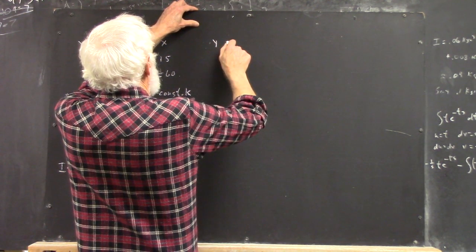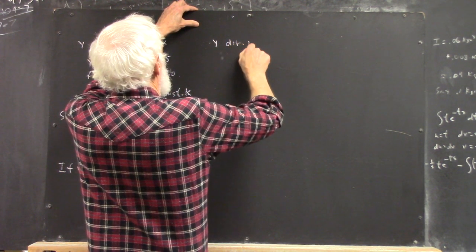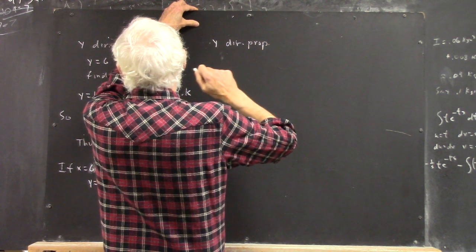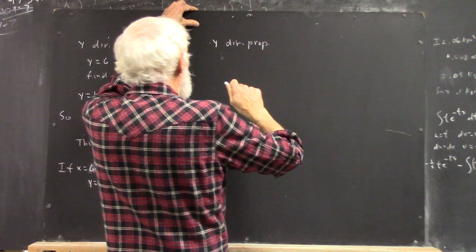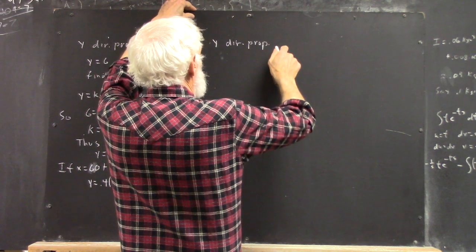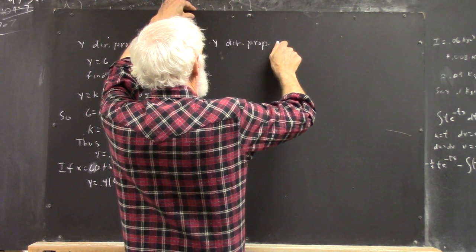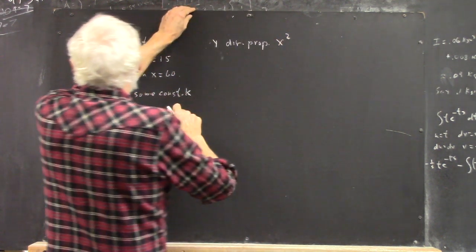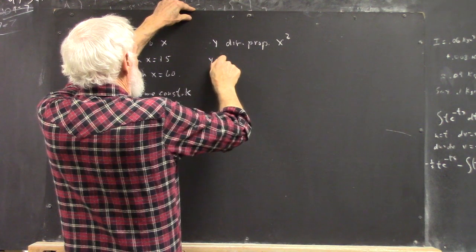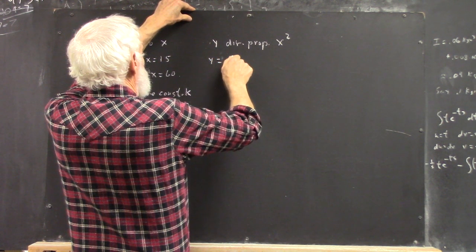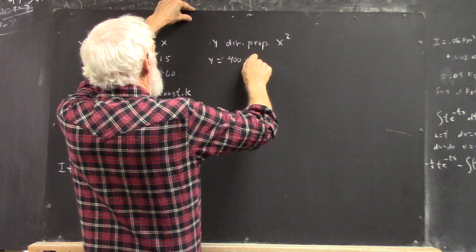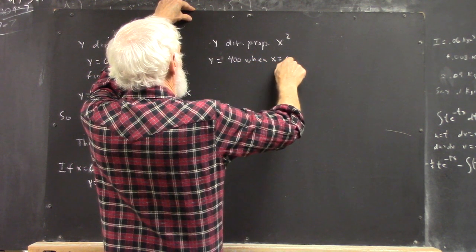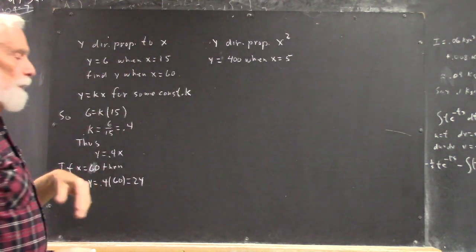Okay, now let's say y is directly proportional to x squared. And y equals 400 when x equals 5.